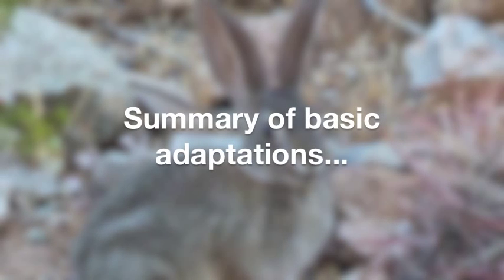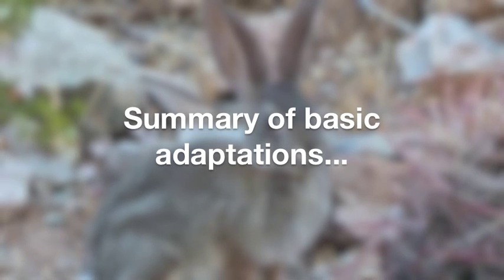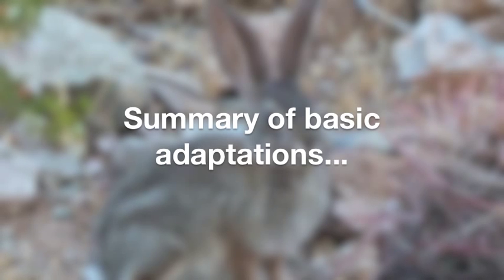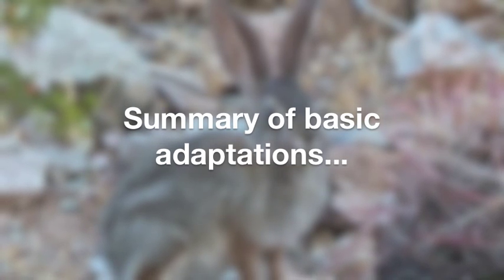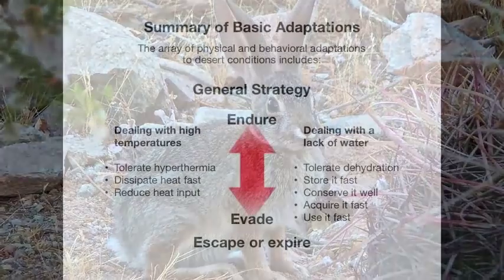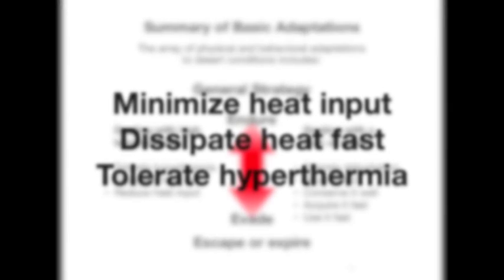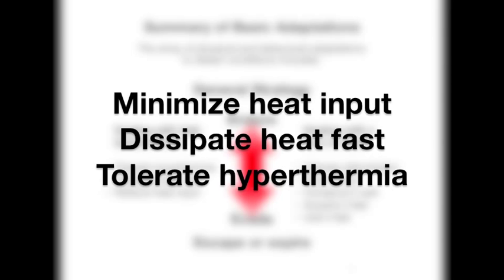Here's a summary of the basic adaptations that we observe in the plants and animals that live here in the desert. All the physical and behavioral changes in our local biota to cope with high temperatures and lack of water fall into these categories. Most adaptations enable plants and animals to either endure or partially evade the heat and drought. To deal with heat, most try to minimize heat input in the first place, dissipate any heat that is absorbed as quickly as possible, or simply tolerate hyperthermia, which is a rise in tissue temperature.